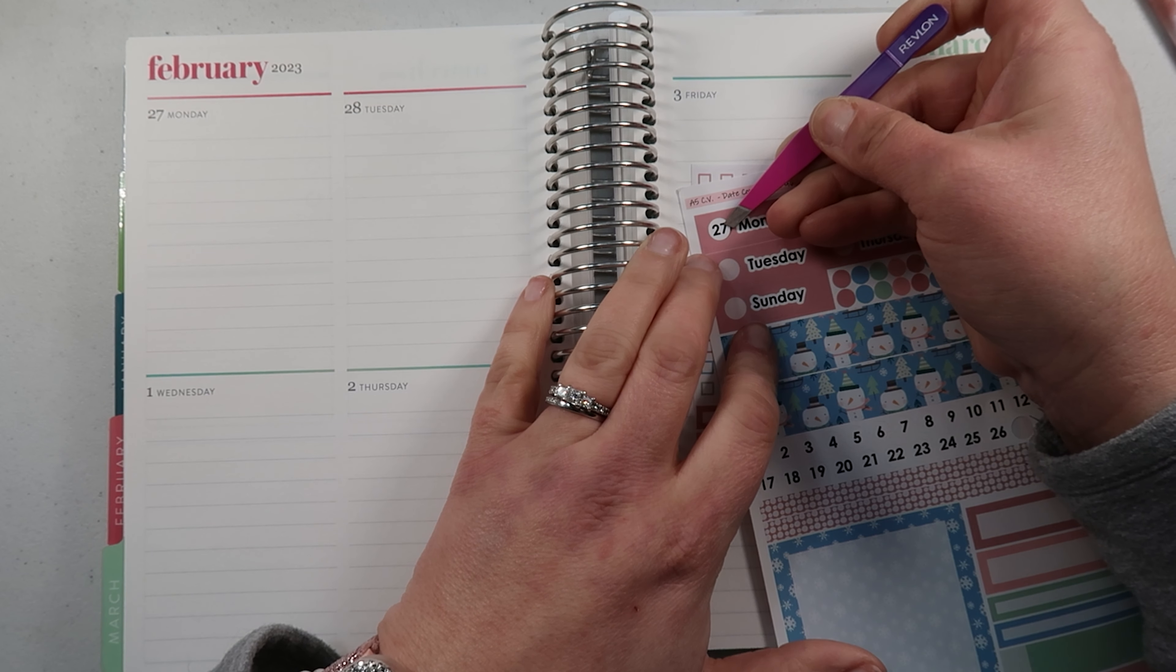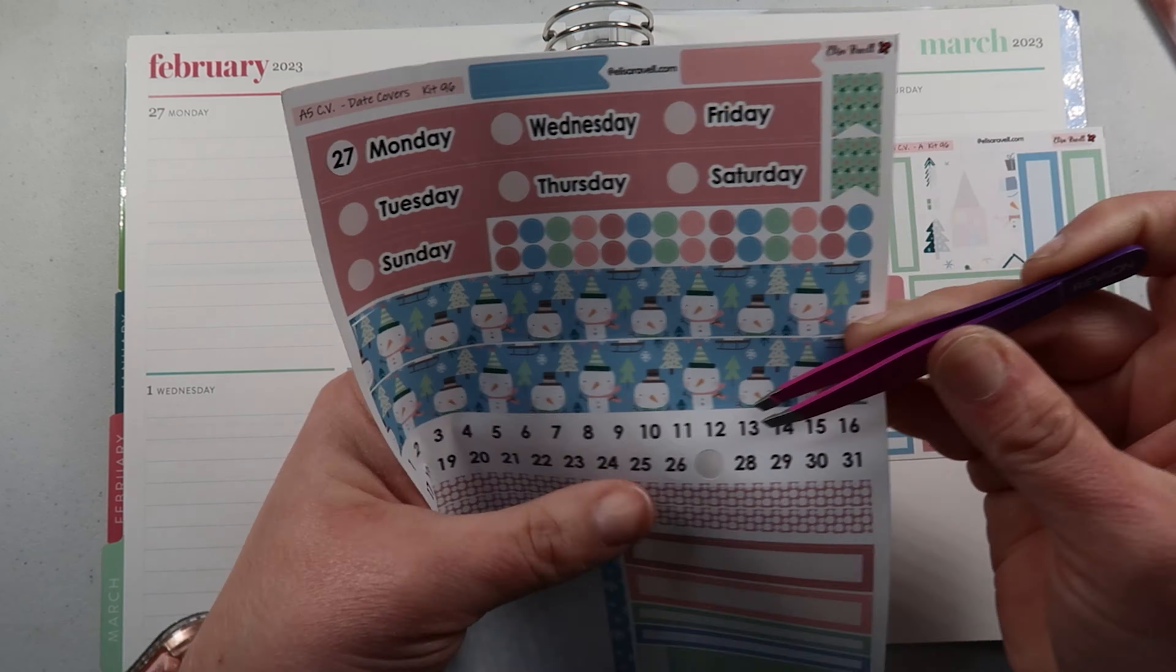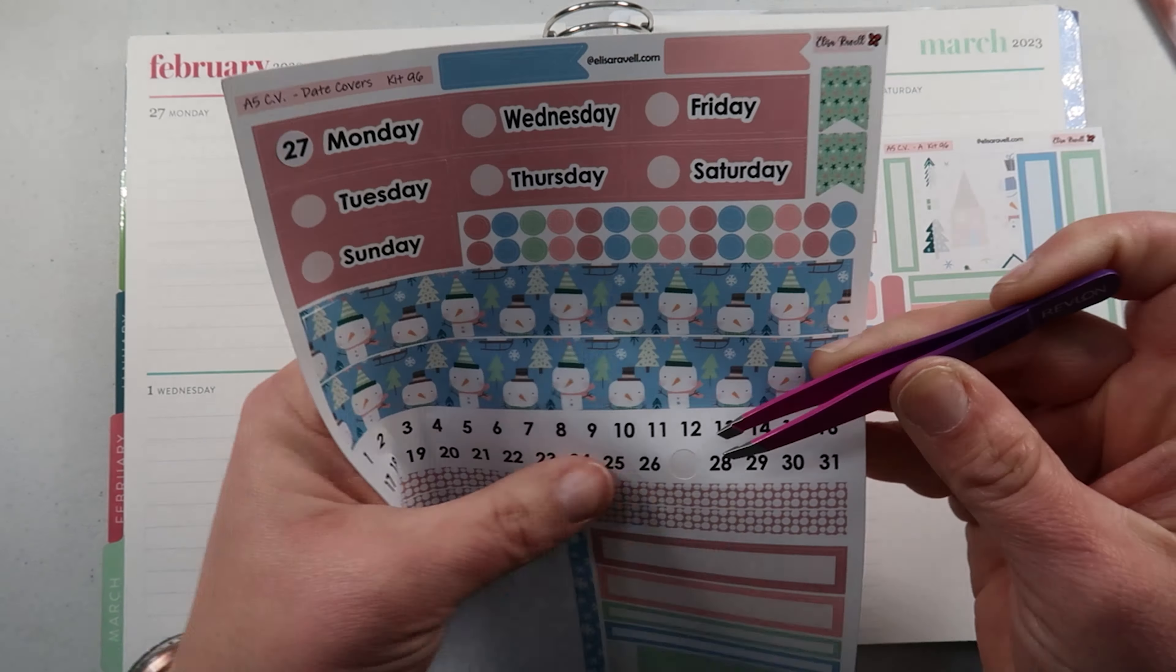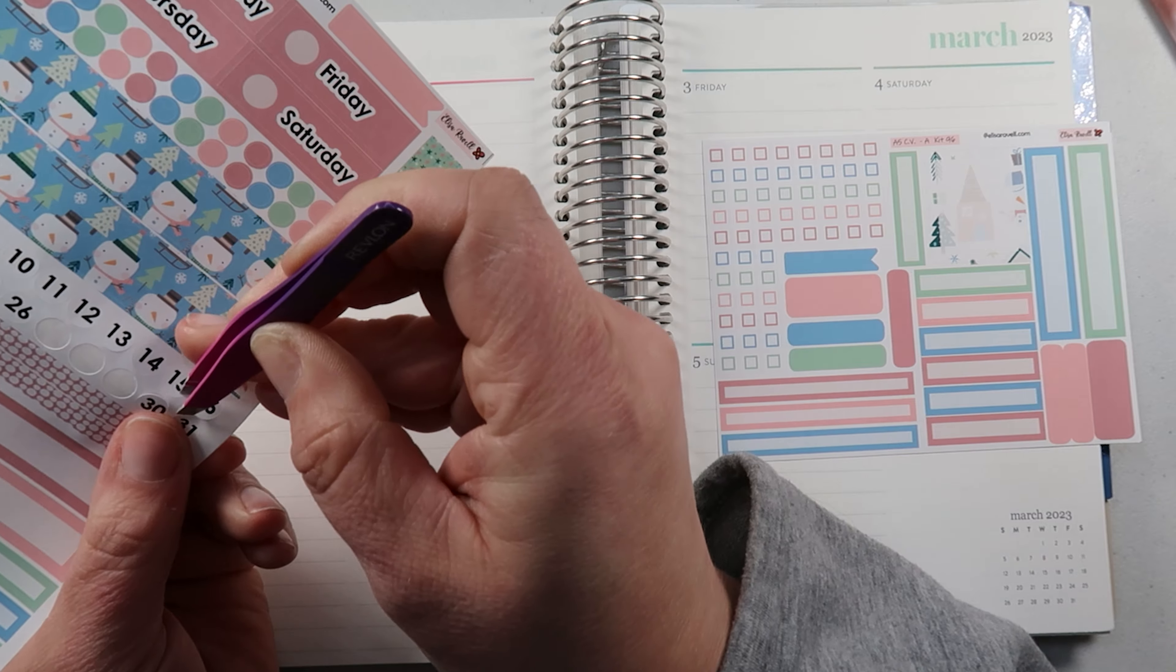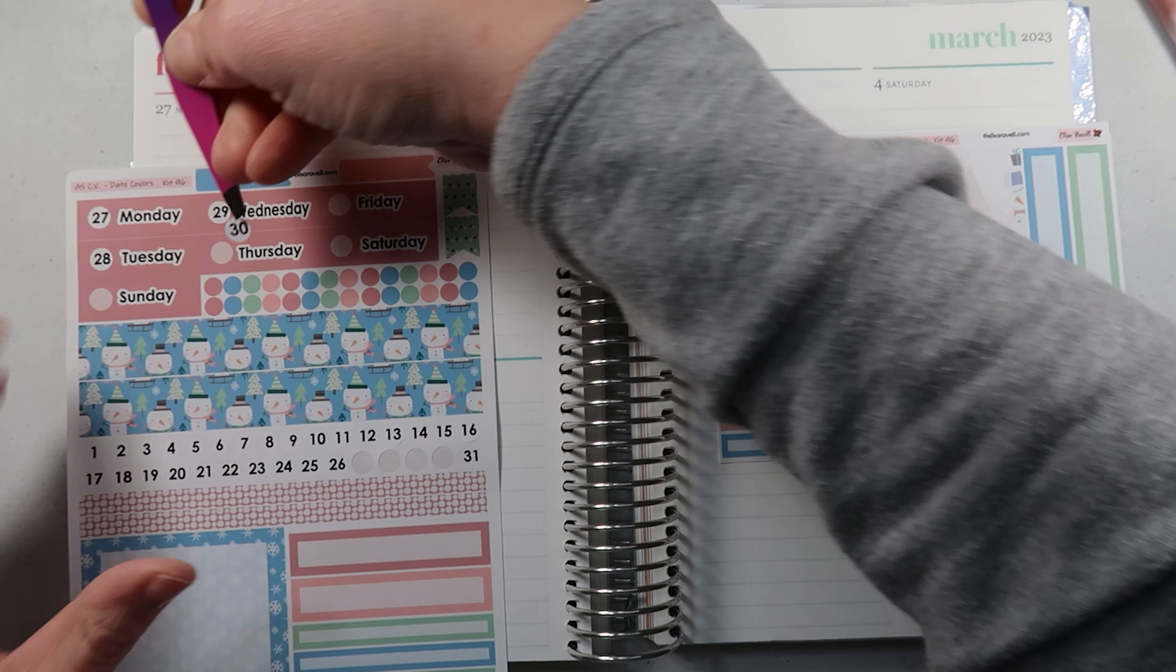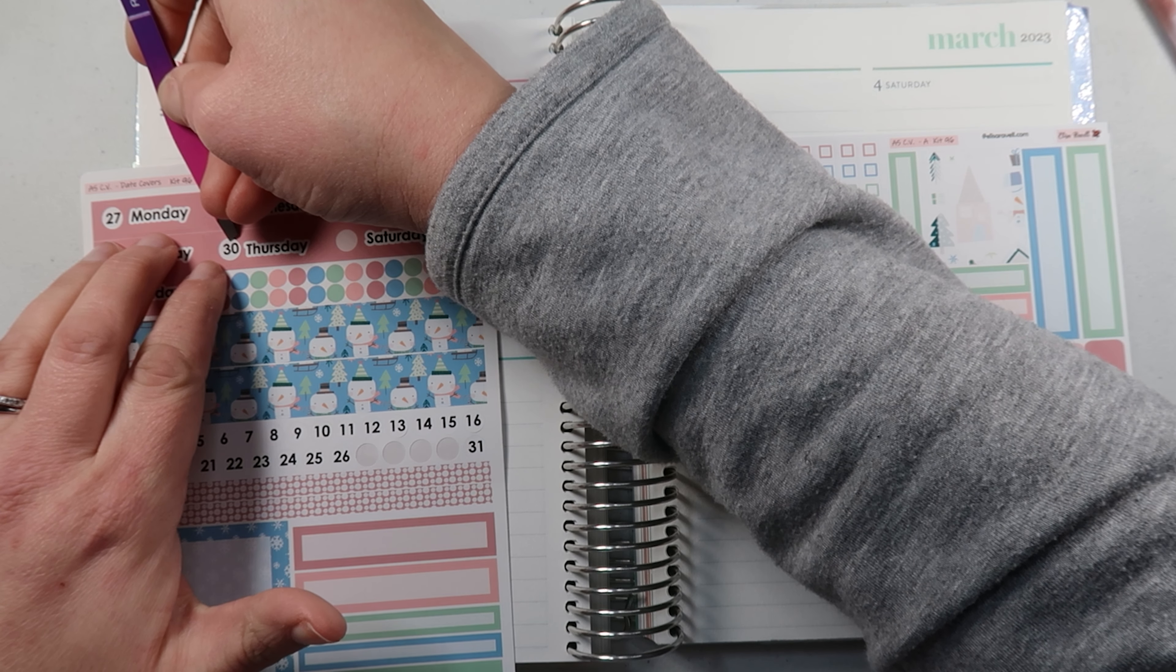Date dots up. Just make sure you pay attention because Monday Tuesday goes down, so they don't go across. You just got to make sure that you put the dates in the right spot.